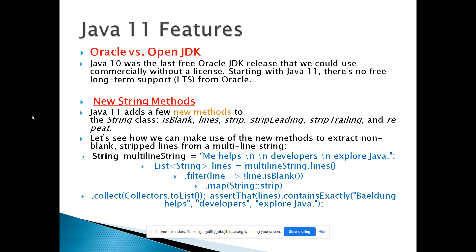Now let's look at Java 11 features compared to Java 8. One notable difference is the Oracle JDK vs OpenJDK licensing: up to Java 10, Java was freely available as open source, but from Java 11 onwards it became a licensed version with no free long-term support. Java 11 also introduced new String methods such as isBlank(), strip(), stripLeading(), stripTrailing(), and repeat(), providing additional string operations compared to Java 8.